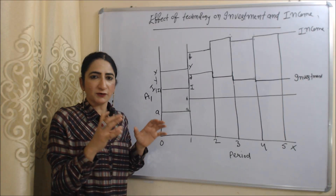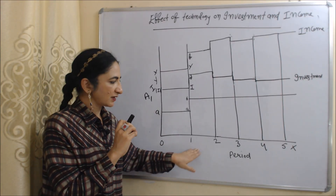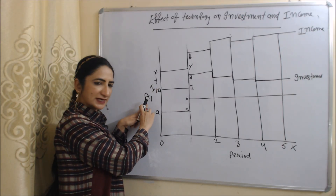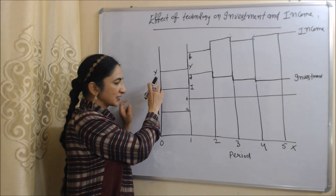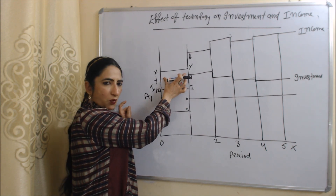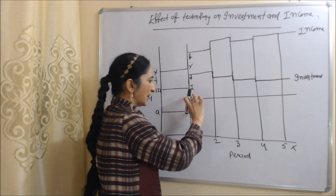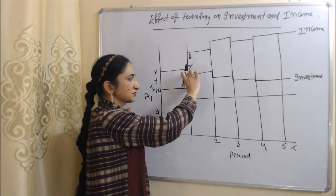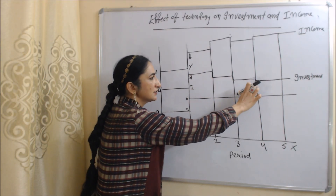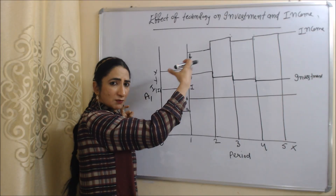With the help of this diagram we will clearly understand the effect of technology on investment and income. On the x-axis we have periods 1 through 5; on the y-axis we have technology, income, and investment. Initially technology is at level AB, investment is at II, and income is at YY. In period one, technology improves to AB, and investment also increases. But after a certain time period, investment starts reducing and finally becomes constant.